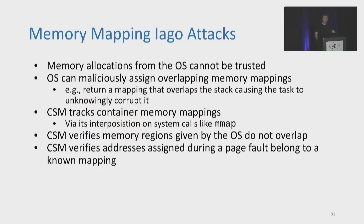Although we protect container memory, the OS is still able to manipulate the container through malicious memory mappings and page assignments. For example, when a task calls mmap, instead of returning a valid new memory region, it could return a mapping that overlaps with the task stack, causing the task to unknowingly corrupt its own stack. To protect against this, the CSM tracks memory mappings while interposing on system calls like mmap, ensuring that mappings assigned by the OS are always disjoint. In addition, since the OS has asked the CSM to update the page tables on its behalf, the CSM can verify that newly allocated addresses assigned during a page fault belong to known memory regions.